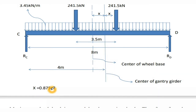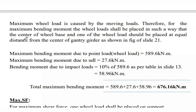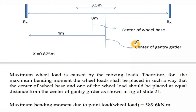The X value (eccentricity offset) is 0.875 m. For maximum bending moment caused by moving loads, the wheel loads shall be placed such that the center of the wheelbase and one of the wheel loads are at equal distances from the center of the gantry girder, as shown in the figure.